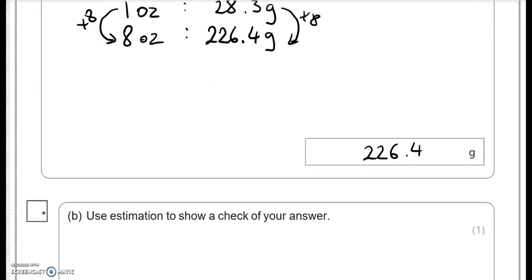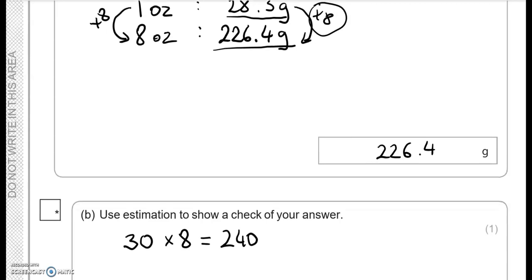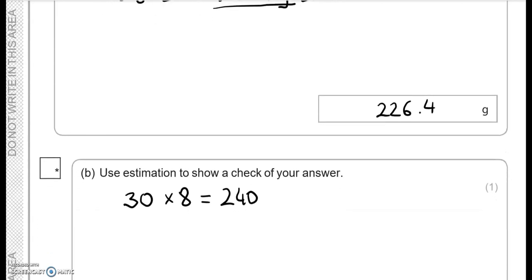Use estimation to show a check of your answer. In the final step I did 28.3 times 8 and that gives me 226.4. So this time I'm going to do 30, so rounding 28.3 to 30 and multiply it by 8 and that gives me 240 which is something close to the answer we had. So that shows we've done the calculation correctly.